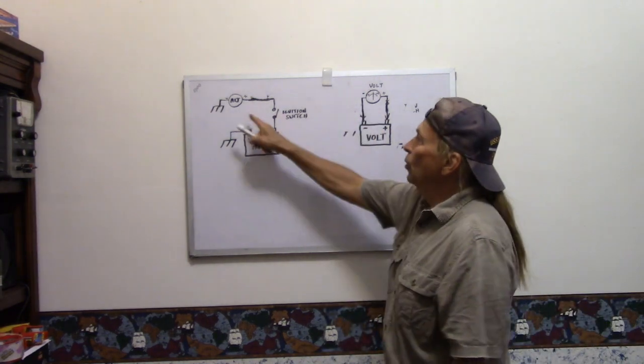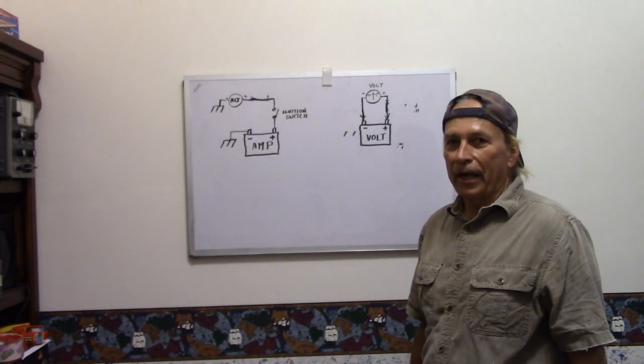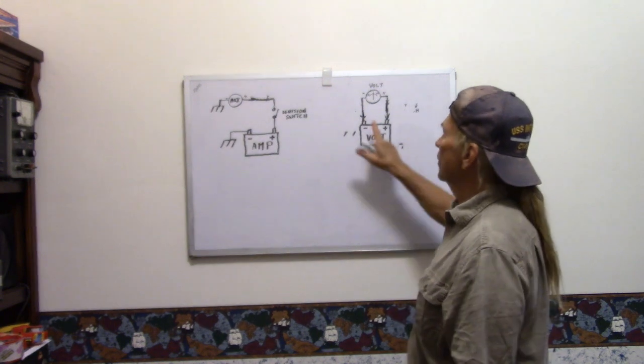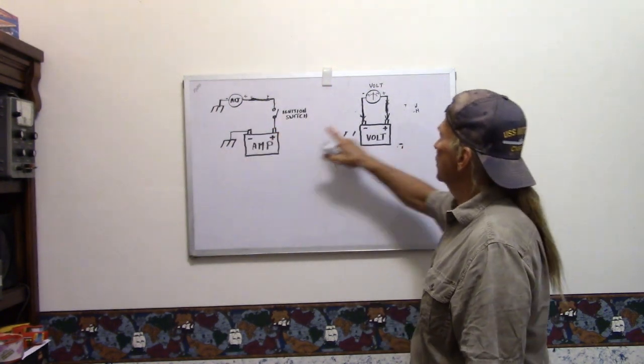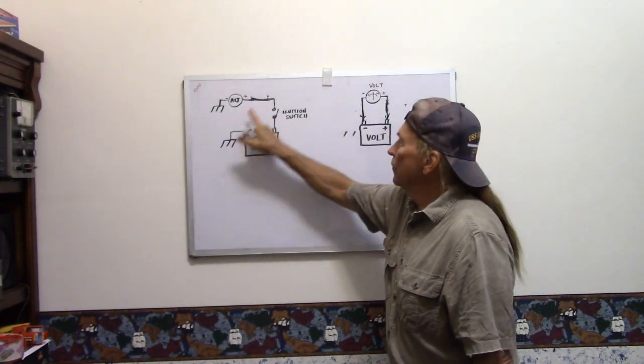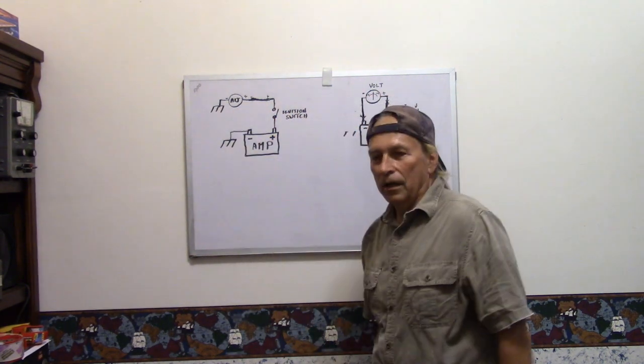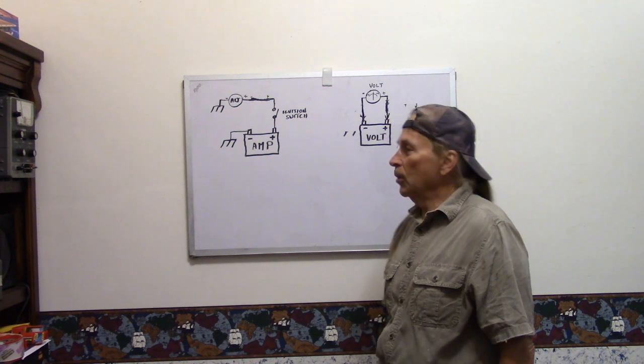Now if you would by chance put an amp meter across the battery it will blow that amp meter out instantly. An amp meter has low internal resistance. If you connected it directly without a load being in there it will blow it out.